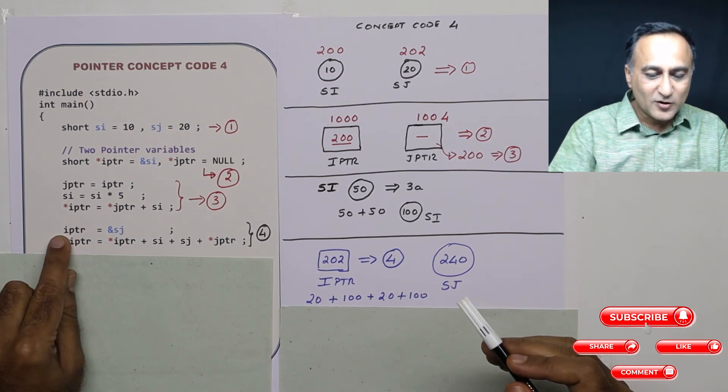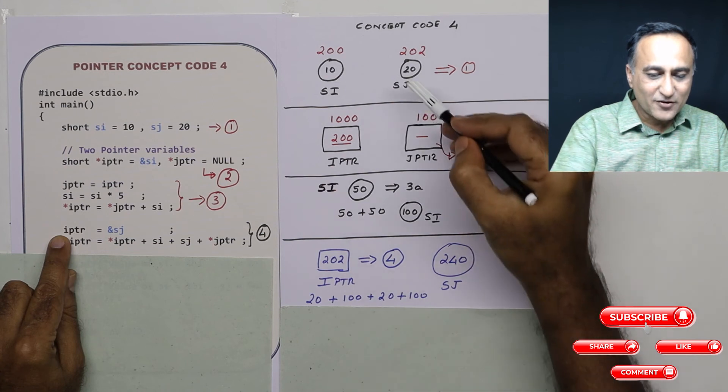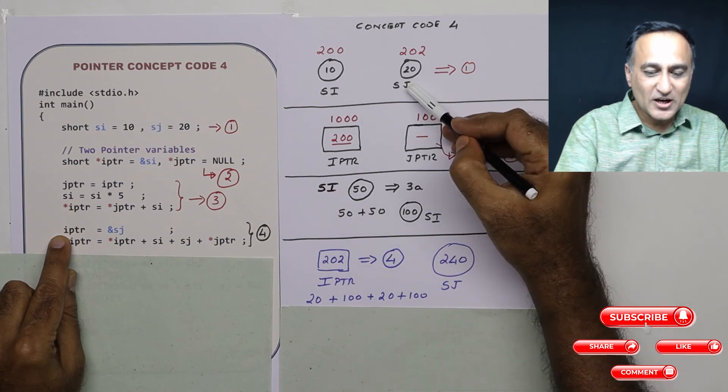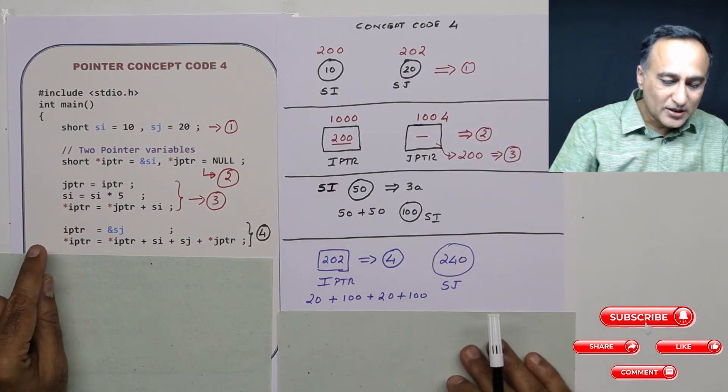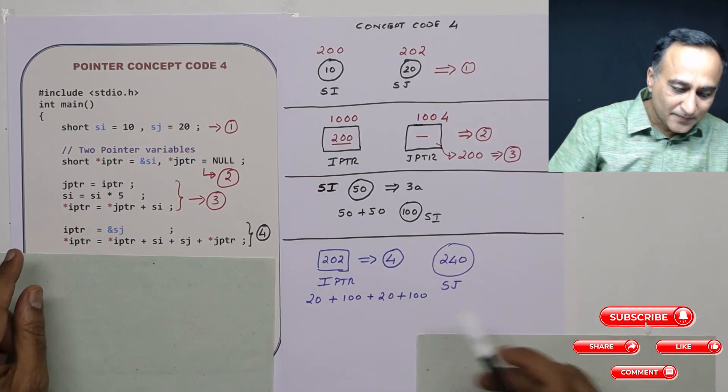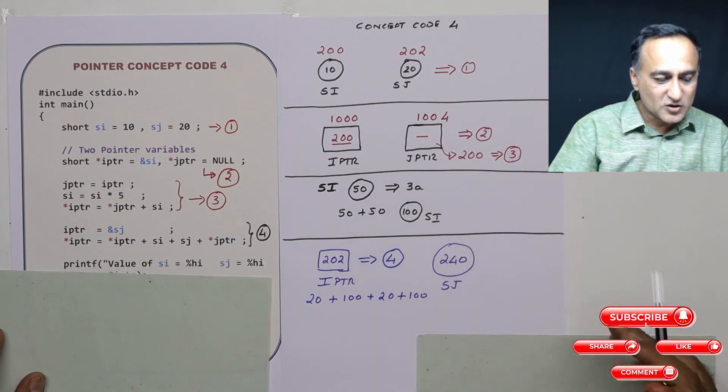IPTR is referring to what? IPTR is referring to address of SJ. So this 20 will now get replaced with 240. This new value of SJ is going to be 240.